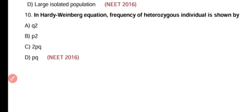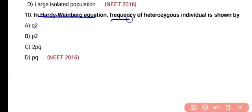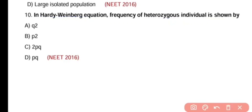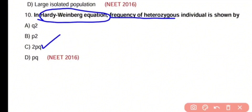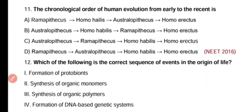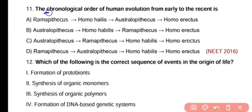Question number 10. In the Hardy-Weinberg equation, the frequency of heterozygous individuals is shown by Q squared, P squared, 2PQ, or PQ only. The correct answer is option C. 2PQ represents the frequency of heterozygous individuals in the Hardy-Weinberg equation.